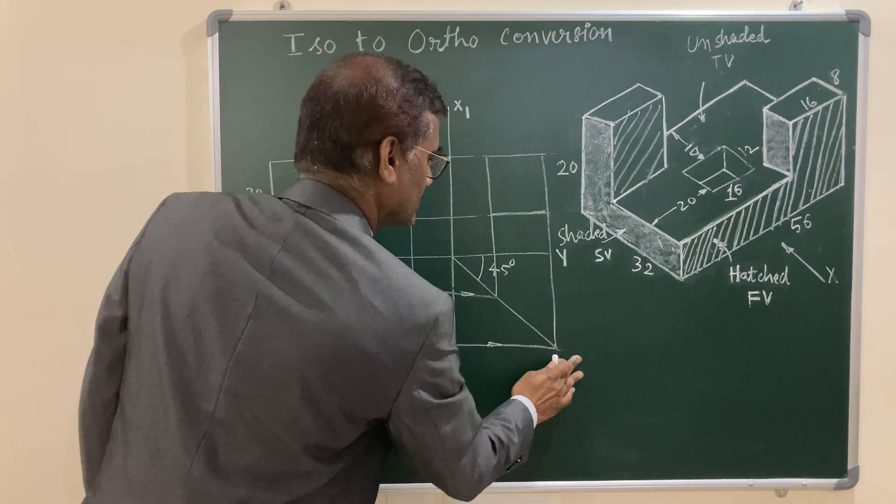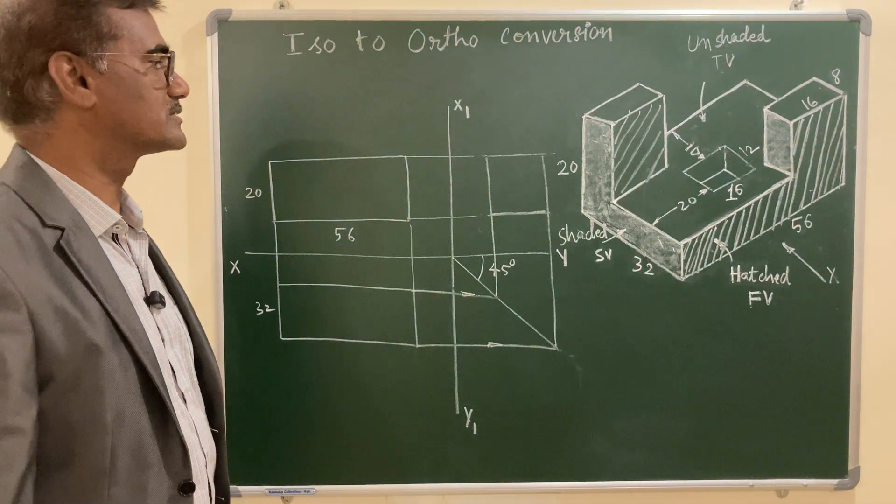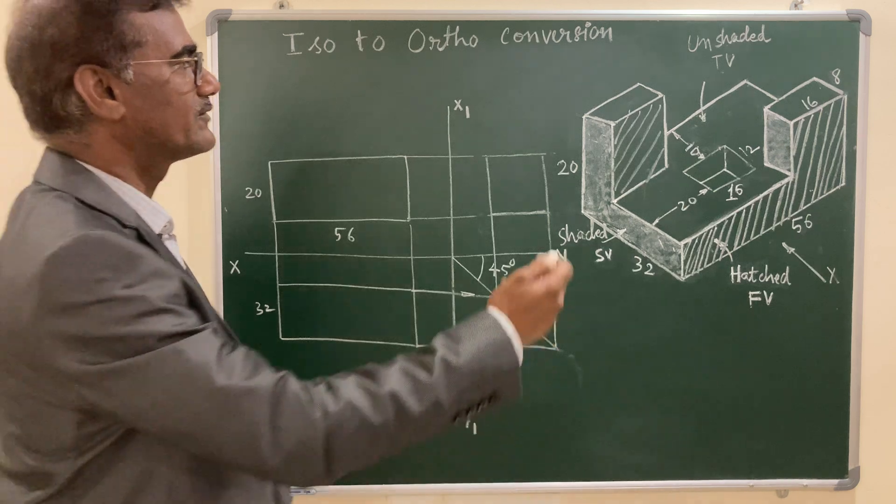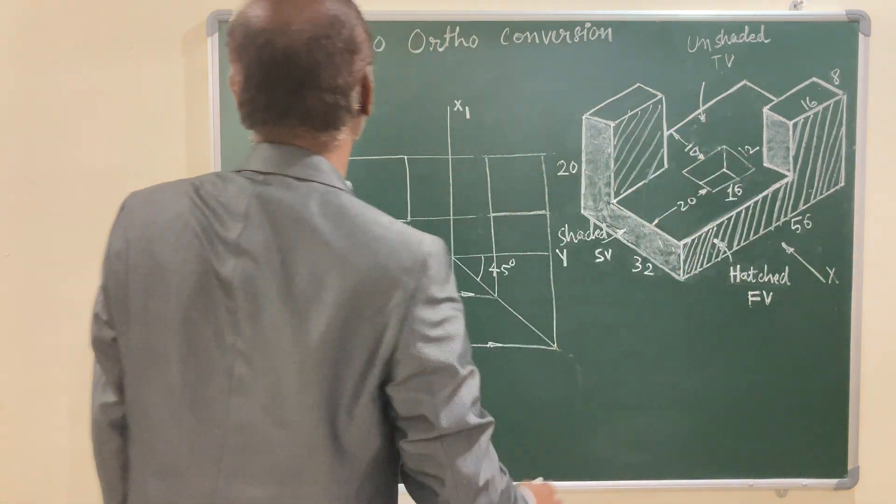So you got all the layout of the views. Now you can go for incorporating the features of the object. You can see that in front view, it appears in the front and it is simply the U-shape you are going to get.